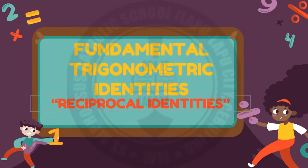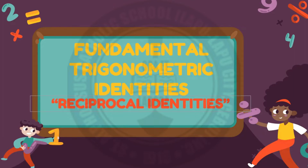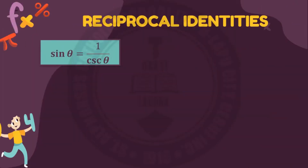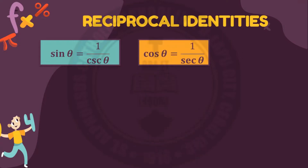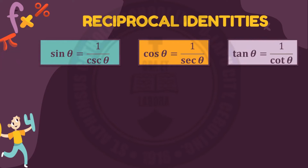Fundamental trigonometric identities are classified into three parts: reciprocal identities, quotient identities, and Pythagorean identities. Let's start with reciprocal identities. The first identity is sin theta equals 1 over cosecant theta. The second reciprocal identity is cosecant theta equals 1 over sin theta. And lastly, tangent theta is equal to 1 over cotangent theta.